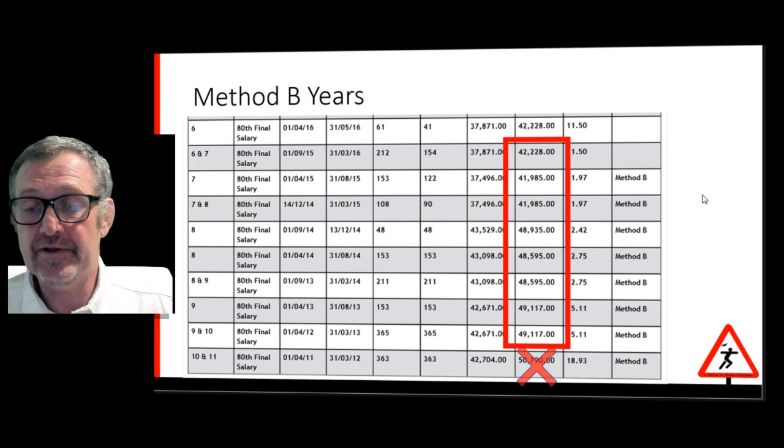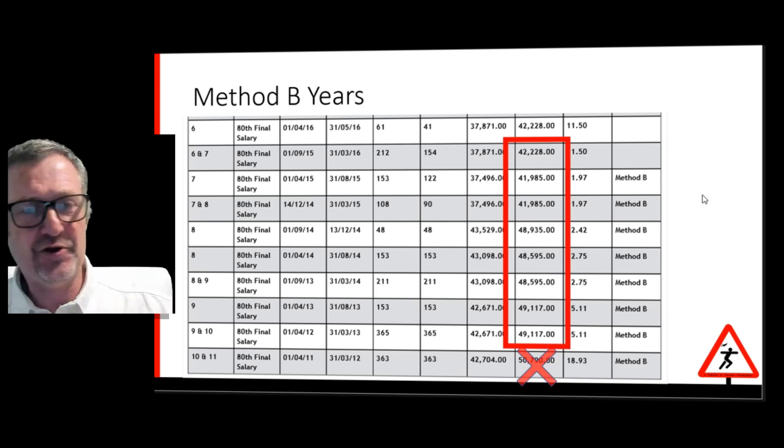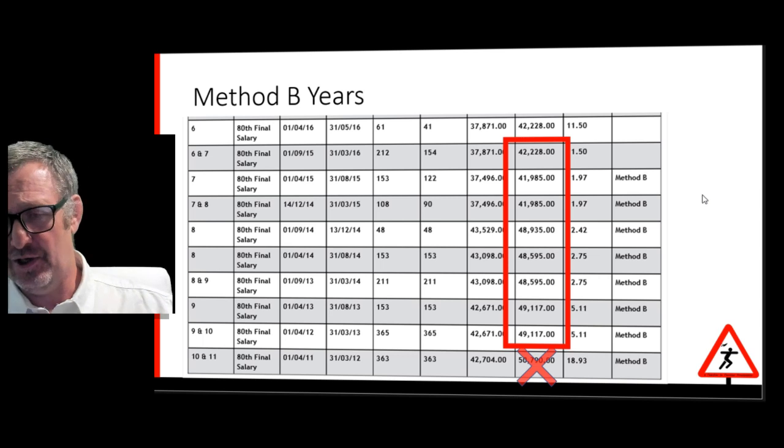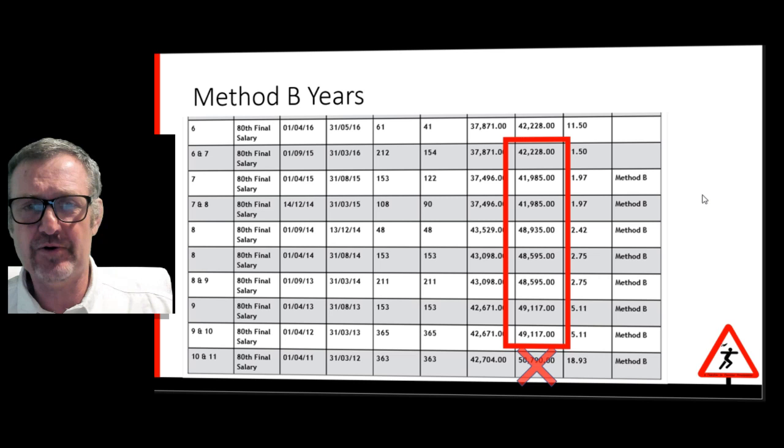Now at this point, you may be wondering what if anything can be done about it. I mean, you cannot stop time. You can't turn back the clock. So just how can you make a difference? How can you stop your final salary pension losing value?